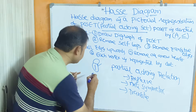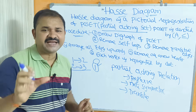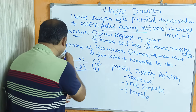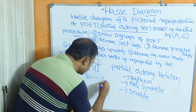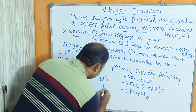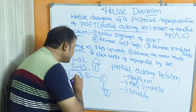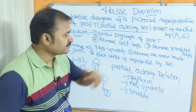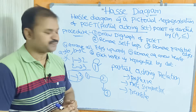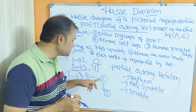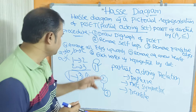Step three: remove transitive edges. A transitive edge means if we have an edge from 1 to 2, and from 2 to 3, then 1 to 3 is a transitive edge. The Hasse diagram does not contain transitive edges. So from 1 to 3, we should not have any edge. If we establish that edge, it becomes a transitive edge, and must be removed.